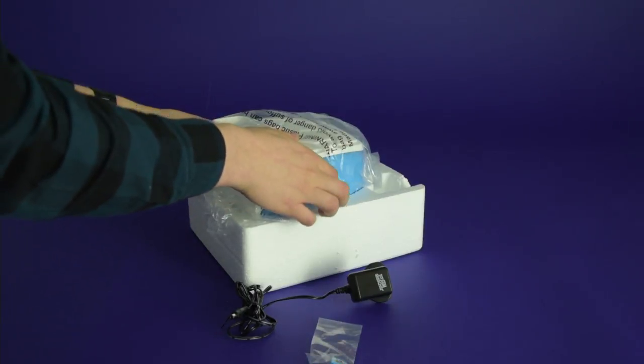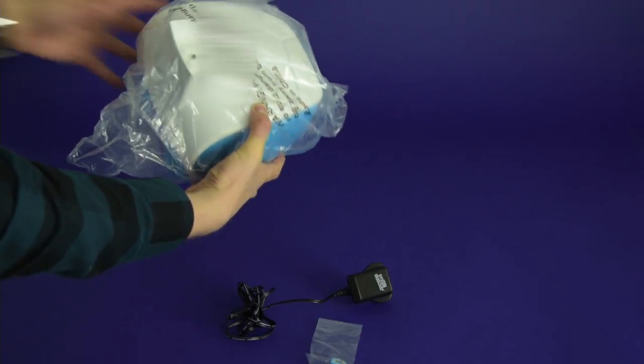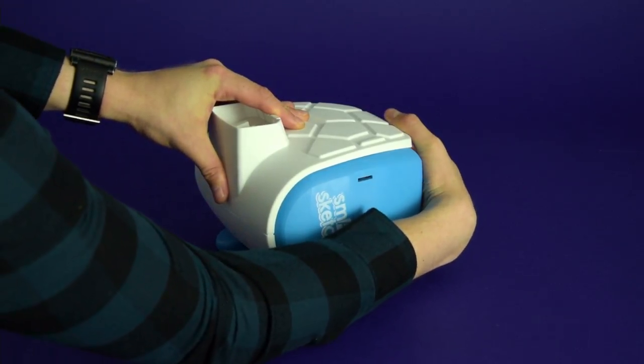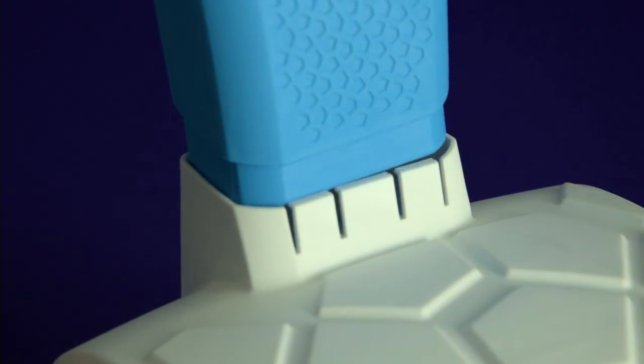Lift the SmartSketcher out of the insert and take it out of the plastic bag. Separate the blue projector head from the white base unit, and slot the head into the top of the unit.